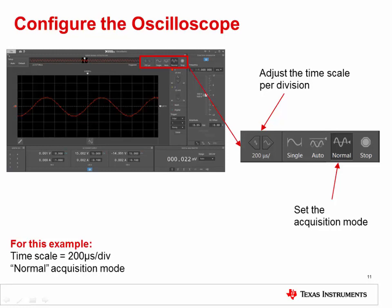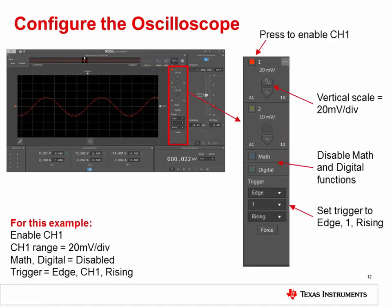Let's now configure the oscilloscope. The overall acquisition and display settings are configurable. Adjust the time scale to 200 microseconds per division. Set the acquisition mode to normal. Press the red button to enable channel 1. Set the voltage range to 20 millivolts per division. Leave the math and digital functions disabled. Set the trigger to edge, channel 1, rising.